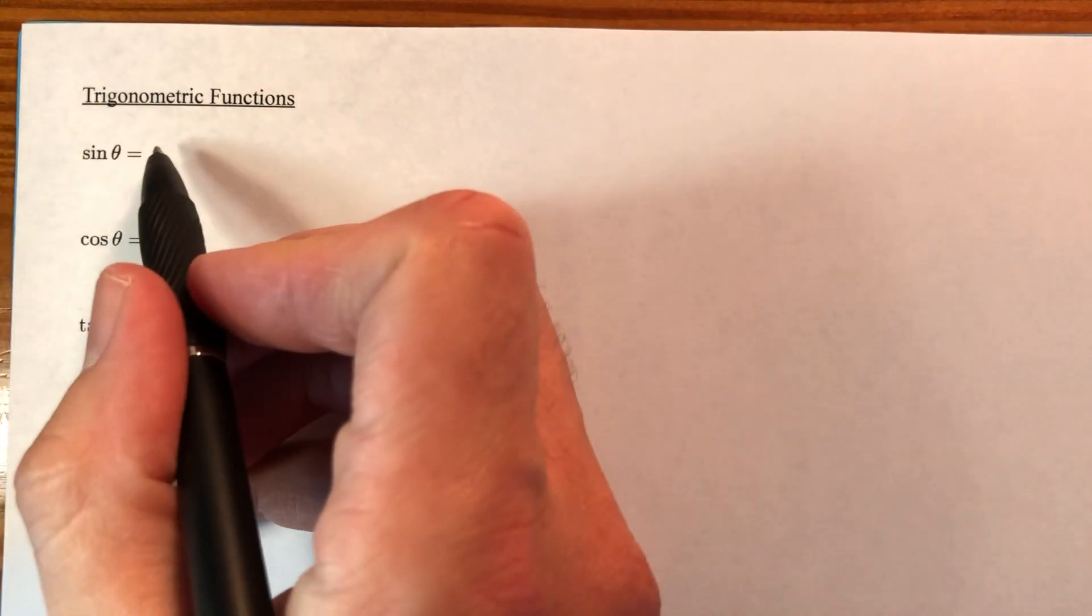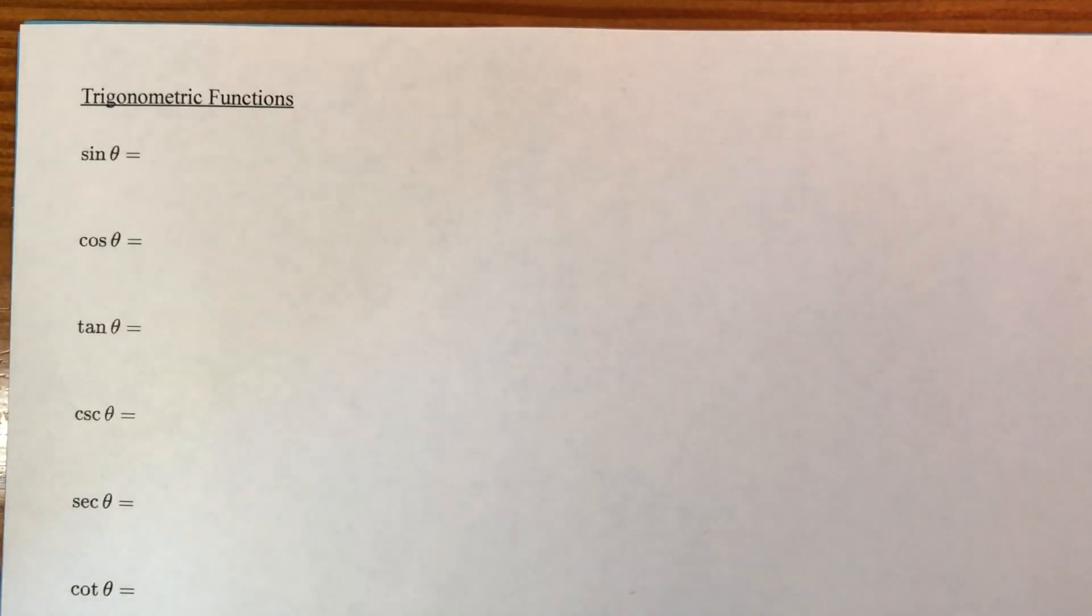Here we go. Let's talk about some trigonometric functions. You're probably trying to predict what I'm going to write. Sine is equal to opposite over hypotenuse. No, actually I'm not. It is equal to opposite over hypotenuse, but that's not what I'm going to write.